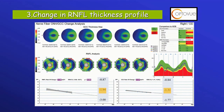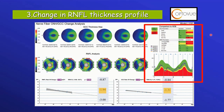In the Optivue, the whole nerve fiber layer circumference is compared between one visit and another, and any difference exceeding the test-retest level is then marked.